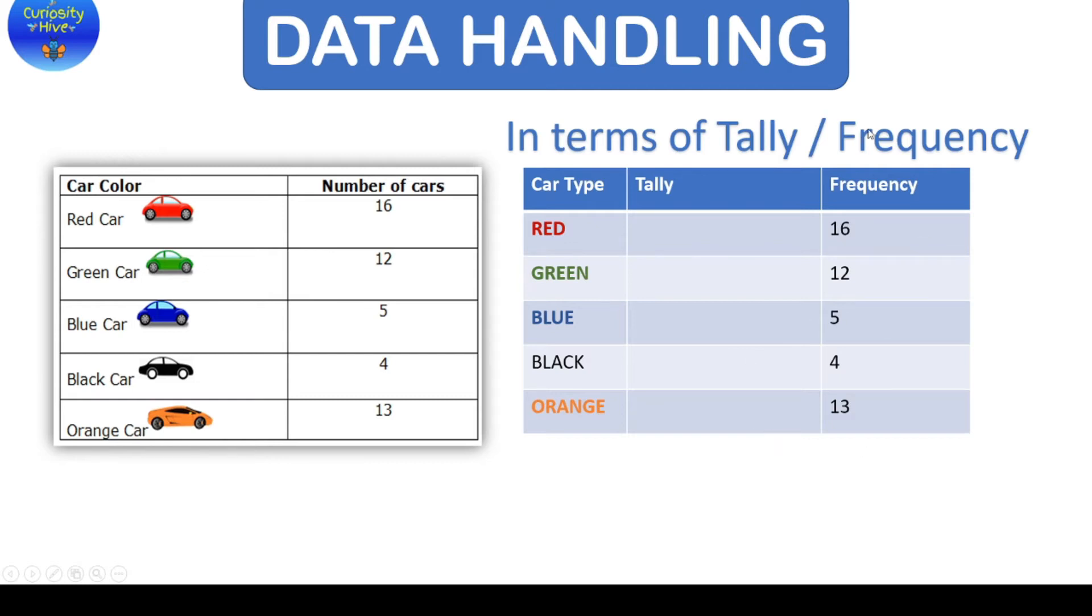So the way to read a tally is, this 16 will be highlighted in terms of bars. So there is 1, 2, 3, 4. Well, do we go on till 16 bars? No. After 4, the 5th bar will cut across these 4 bars. So this one entire section is for 5 unit. So for 16, it is 5 times 3, 15 plus 1. So these 5 units will be depicted 3 more times making the count 15 plus 1 bar which is 16.